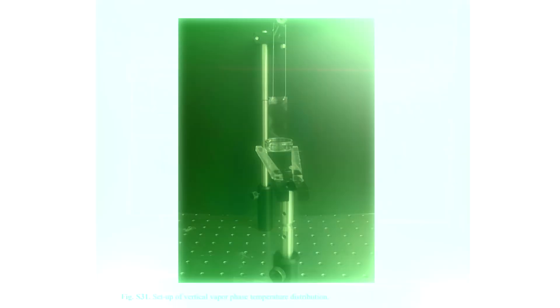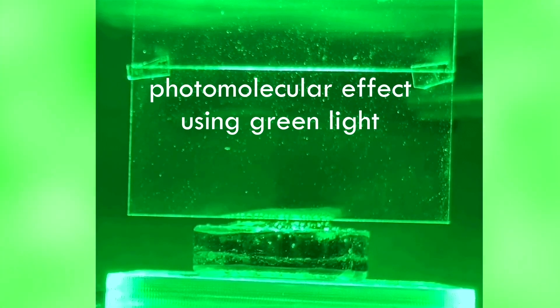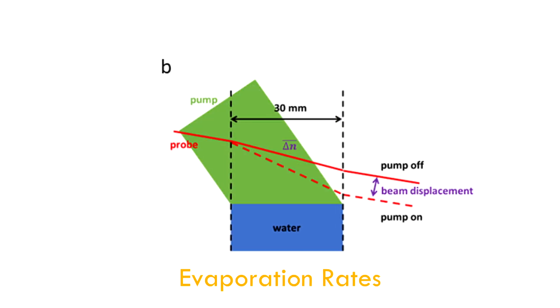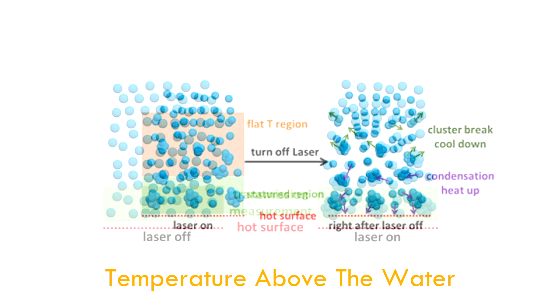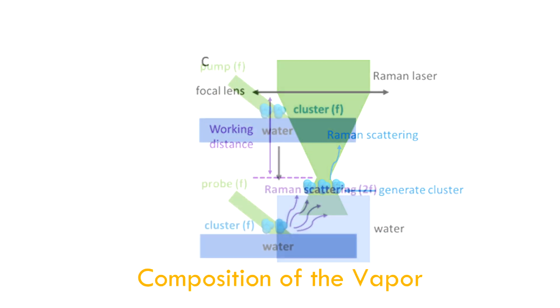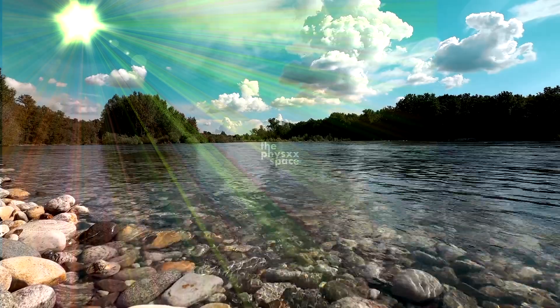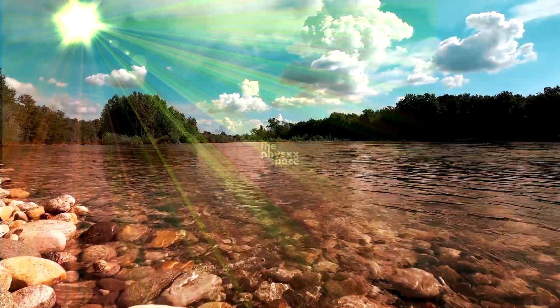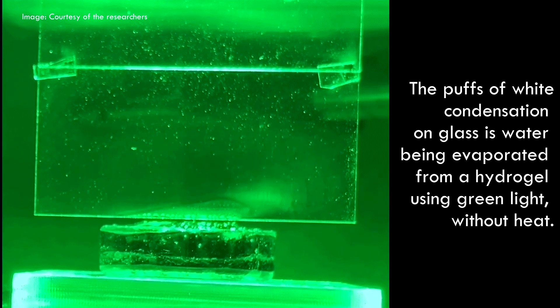The researchers did tons of experiments to prove this effect is real. They measured the evaporation rates, the temperature above the water, and even the composition of the vapor. They consistently saw signs that light, not heat, was driving the evaporation. And get this, the effect is strongest in green light, which is the color that water interacts with the least.